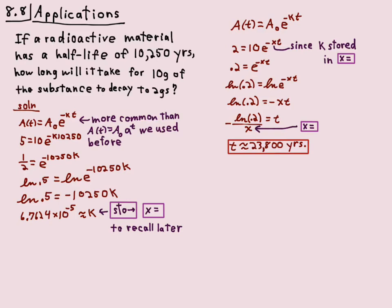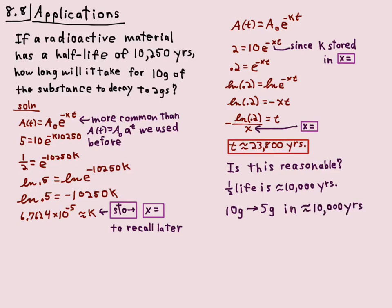This is theoretical anyway — impurities and other factors would affect real results. The answer I got is about 23,800 years, which is close to my rough estimate of around 20,000 years. Since we needed to get down to 2 grams rather than 2.5, it has to be a bit longer than 20,000 years, so 23,800 looks correct.